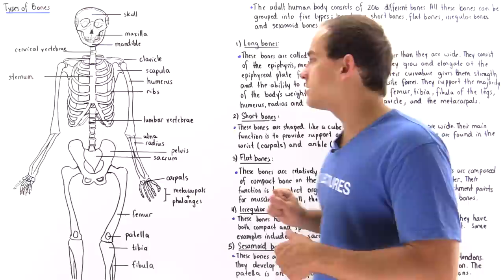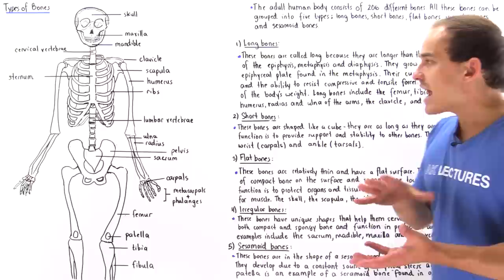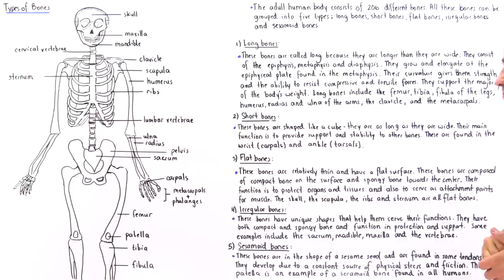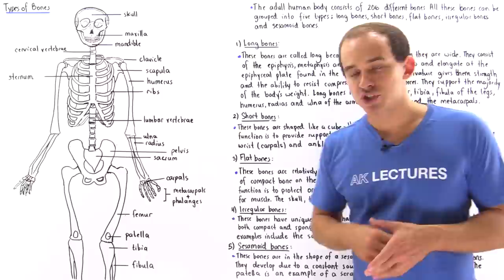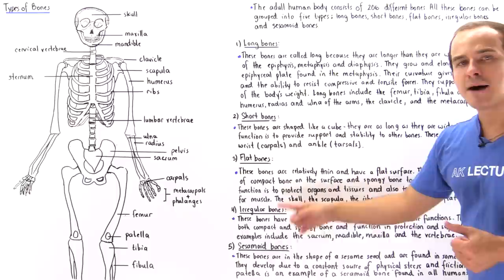Irregular bones are bones that have a unique shape that cannot be labeled as long, short, or flat bones. These unique shapes help them carry out certain specific functions. Irregular bones typically consist of both compact and spongy bone — spongy bone at the center and compact bone on the surface — and they function in protection as well as support.